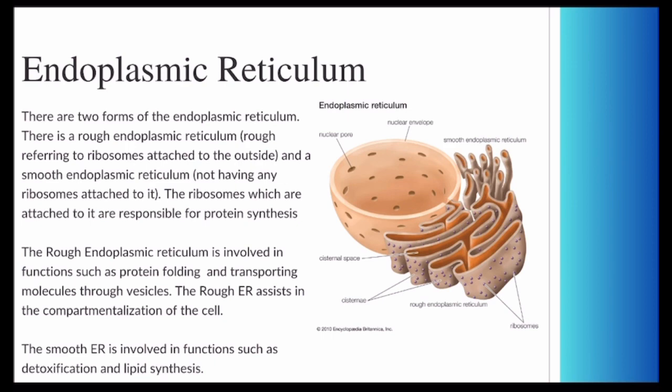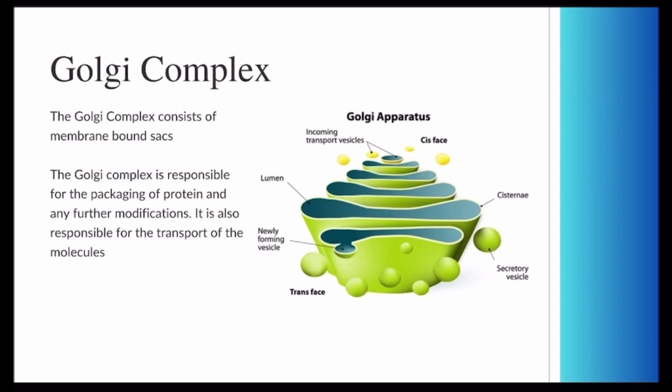The smooth endoplasmic reticulum is involved in detoxification and lipid synthesis. The Golgi complex is basically what's going to be transporting our proteins and packaging them. It also further modifies proteins.